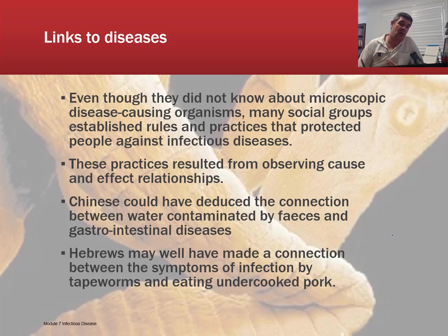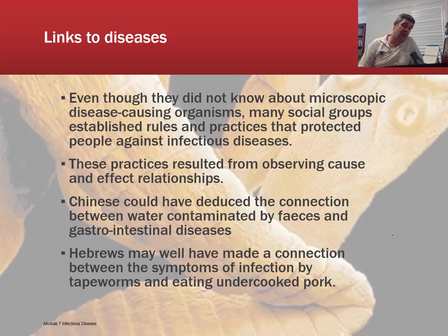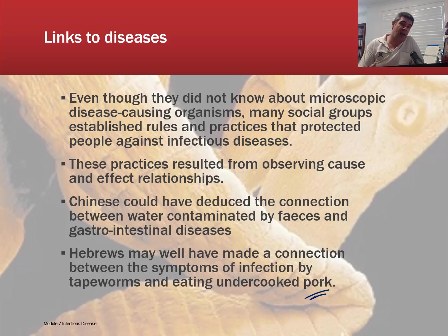Some of these practices resulted from observing cause-and-effect relationships. Causation and correlation are two important concepts in science, and they're not necessarily related to one another. But by learning about the association between certain conditions and certain practices, we started to develop an understanding of what might be present in our food or water. The Chinese could have deduced a connection between water contaminated by feces and gastrointestinal diseases. Similarly, the Hebrews may have made a connection between the symptoms of tapeworm infection and eating undercooked pork. Certain livestock are just not part of certain cultures, and maybe underlying the religious reasons is some understanding of the potential for disease transmission.